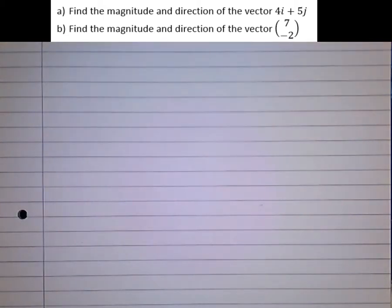A vector is sort of like a set of directions. It describes movement of something. We'll get straight into a question here. Find the magnitude, that's the length, and the direction of the vector 4i plus 5j.